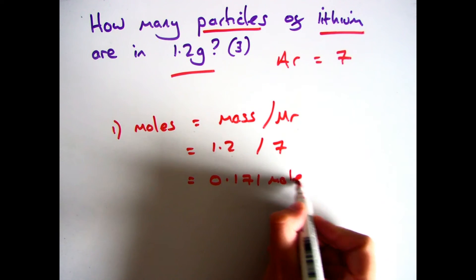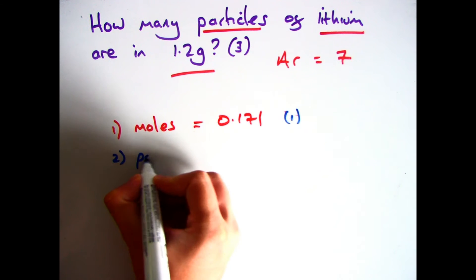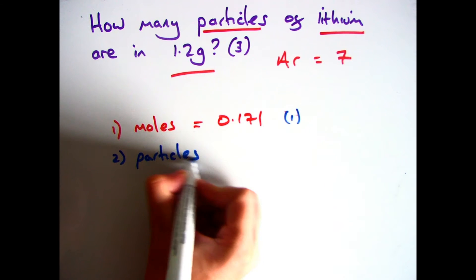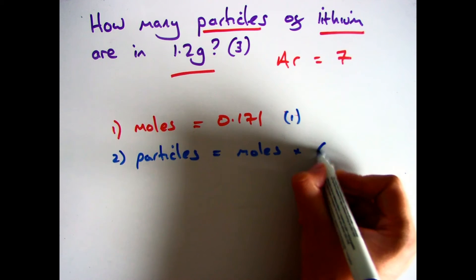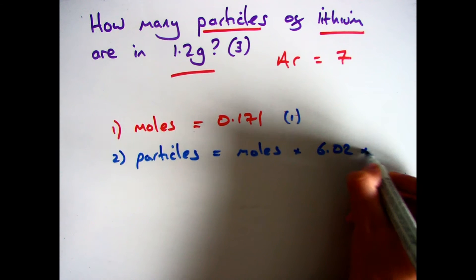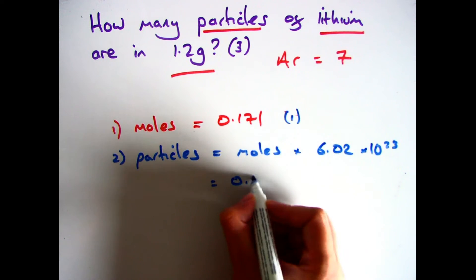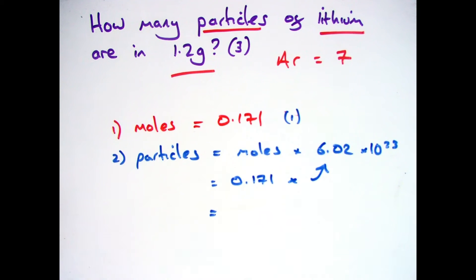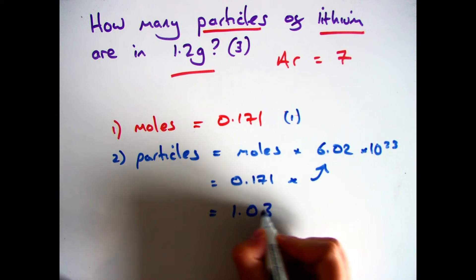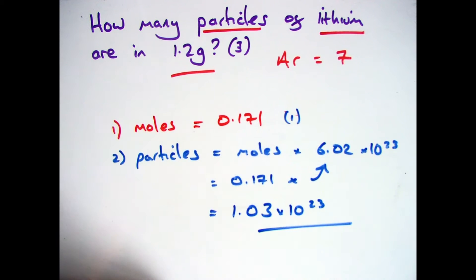Now you've converted mass to moles, the next step is to work out the number of particles. Take the number of moles you just worked out and multiply by Avogadro's number, 6.02 × 10²³. So 0.171 times 6.02 × 10²³ comes out to 1.03 × 10²³. The correct answer gives you a full three marks.